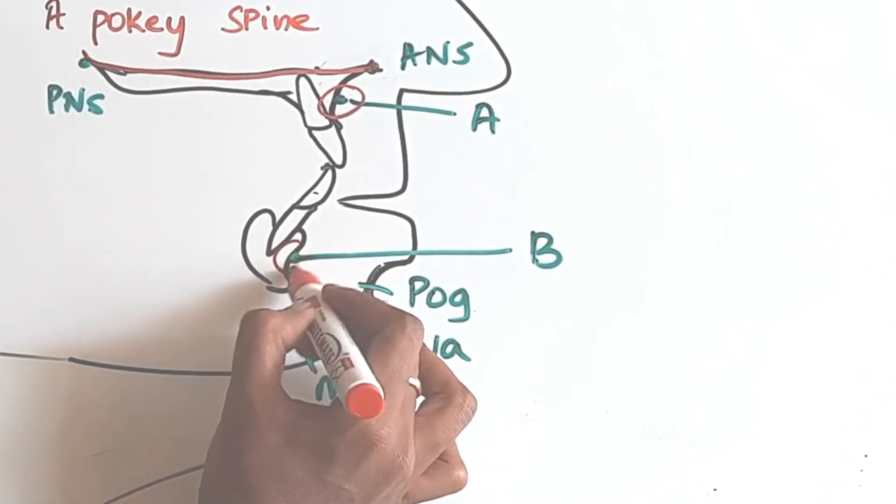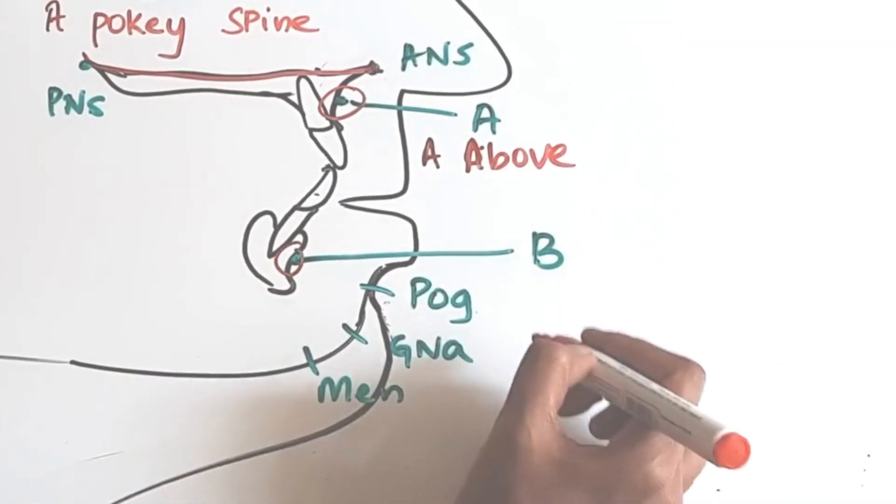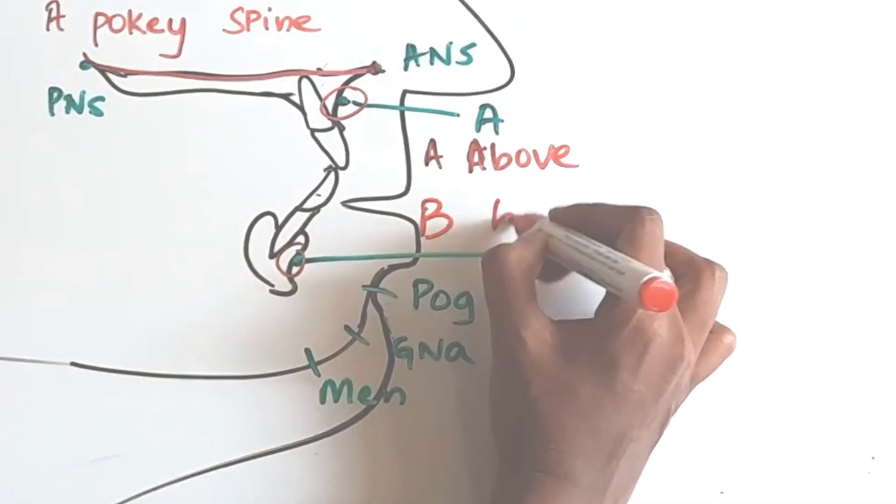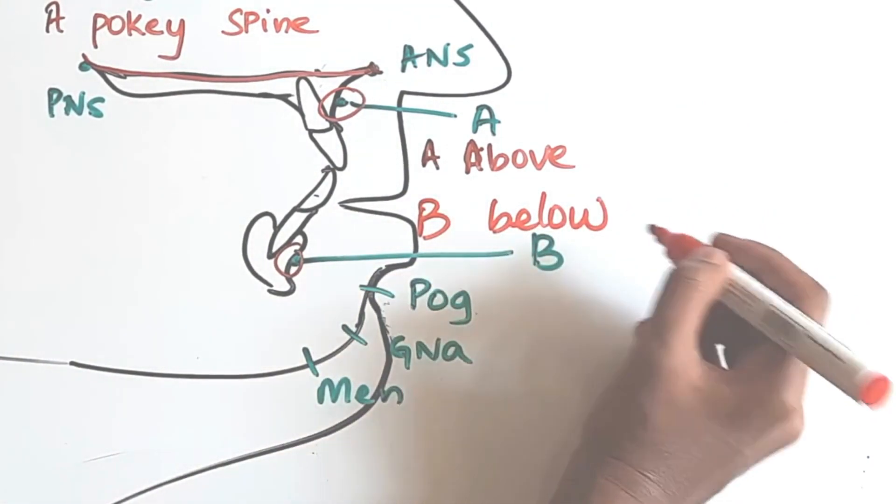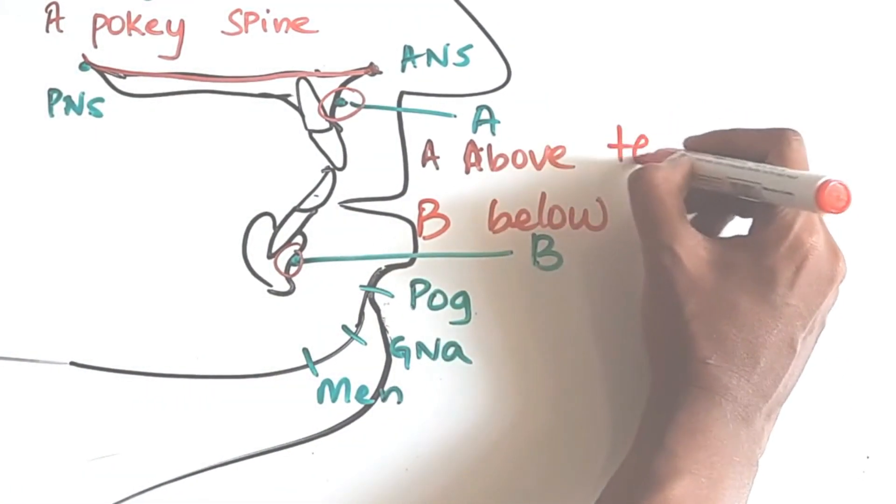For point A, it's A above teeth. Above referring to the central incisor, maxillary central incisor. And B, point B is B below teeth.